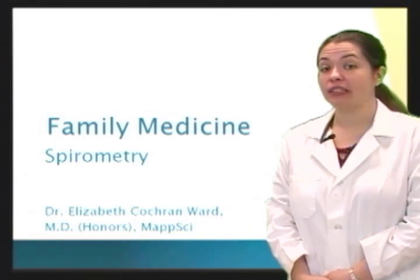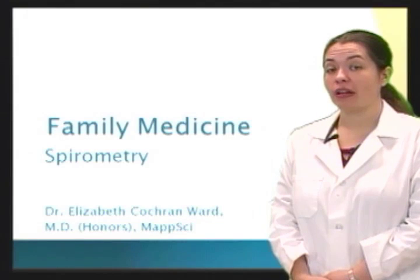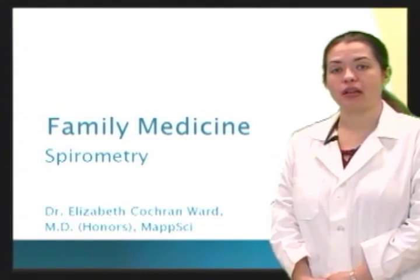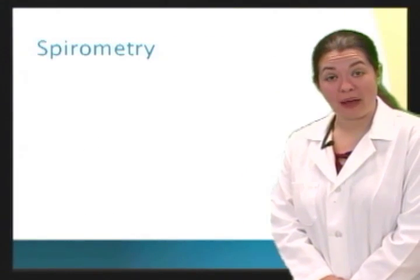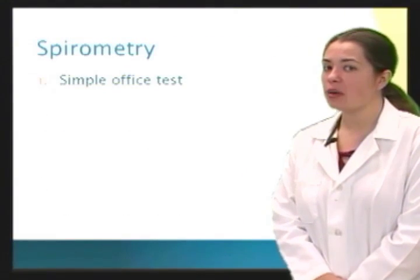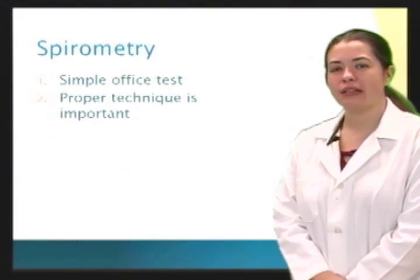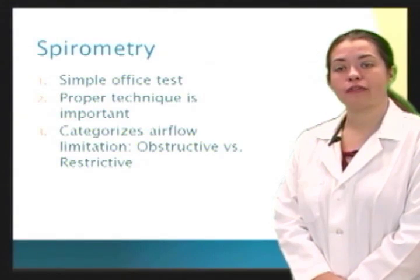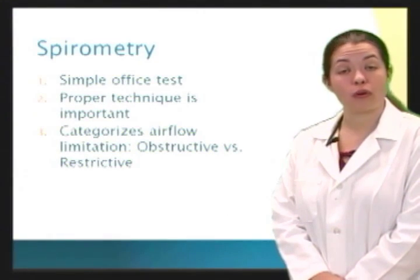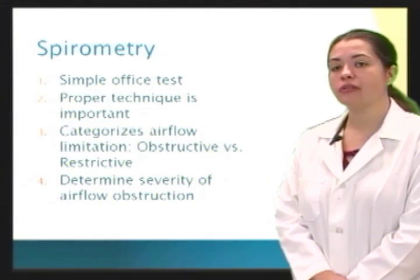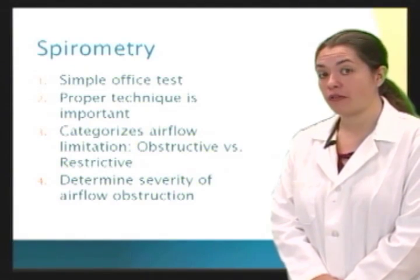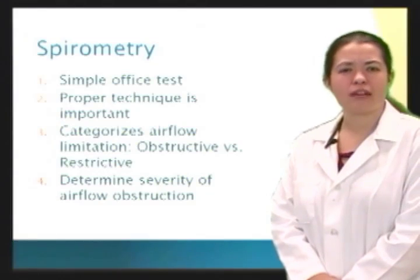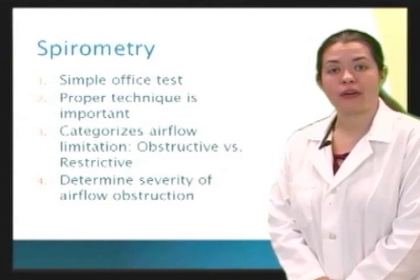Hi, my name is Dr. Elizabeth Cochran Ward, and on this episode of The Anatomy Guy we're going to cover spirometry. It's a very simple office test, but proper technique is important to get accurate data. It can help us categorize airflow limitation — obstructive or restrictive — and it can also help us determine severity of airflow obstruction. Let's watch a video on how it's done.